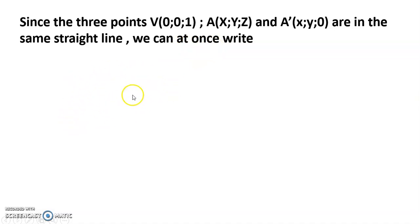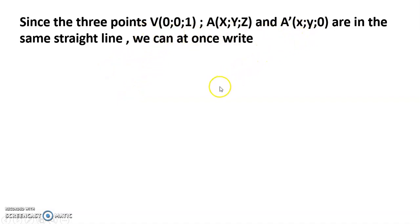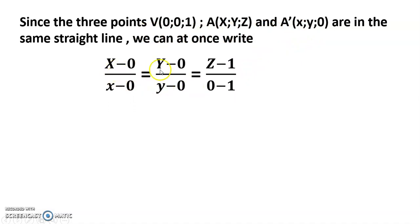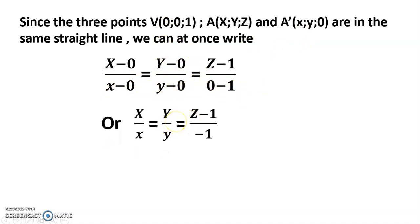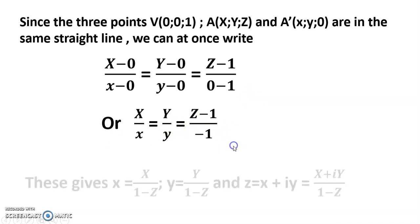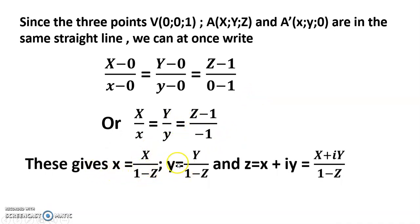Please pause the video and write down the diagram — VA and A' form one straight line. The straight line equation gives: (x−0)/x = (y−0)/y = (z−1)/(−1), with direction ratios (x, y, −1). This gives X = x/(1−z) and Y = y/(1−z).